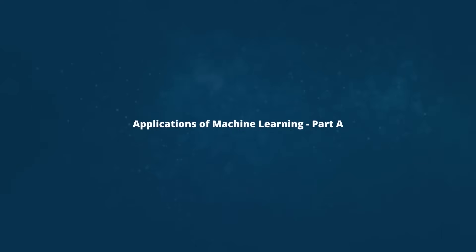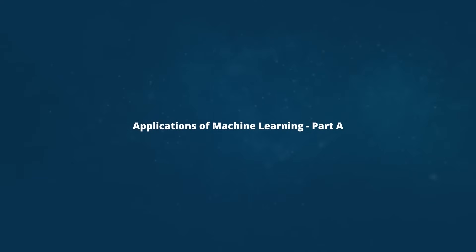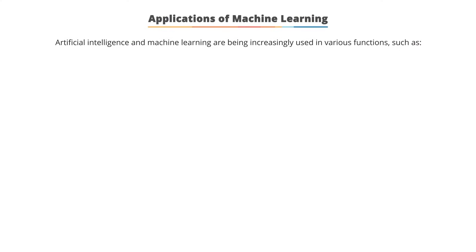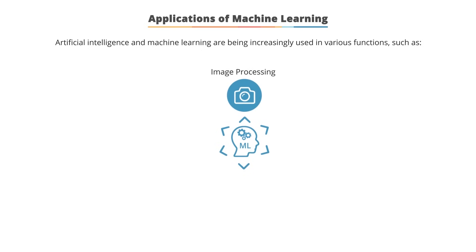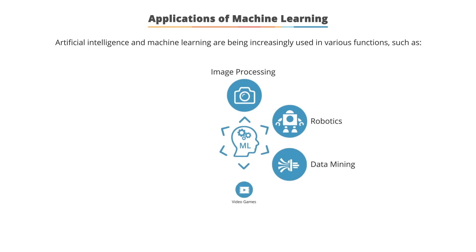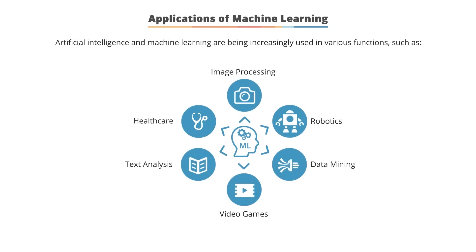Now let's look at some real-time applications of machine learning. Artificial intelligence and machine learning are being increasingly used in various functions such as image processing, robotics, data mining, video games, text analysis, and healthcare.